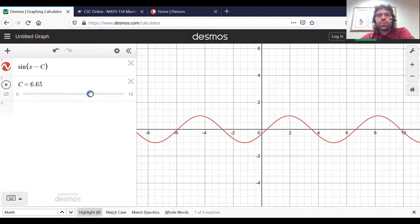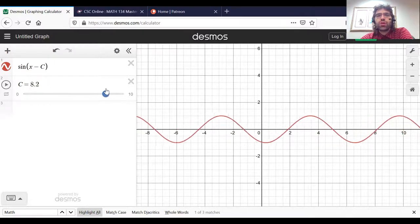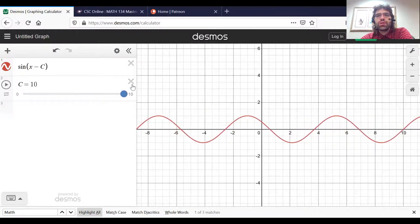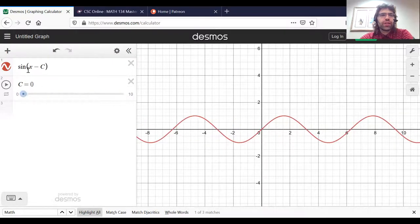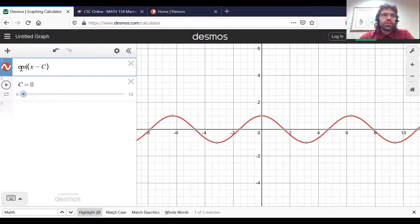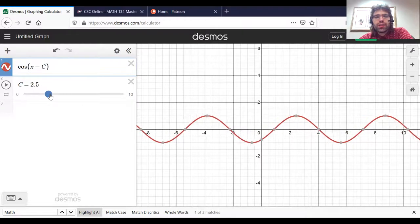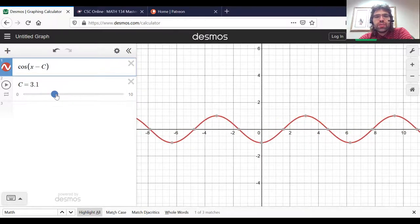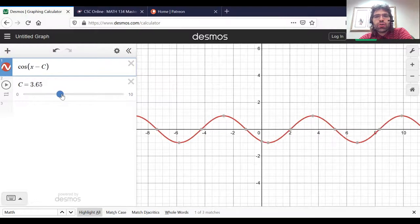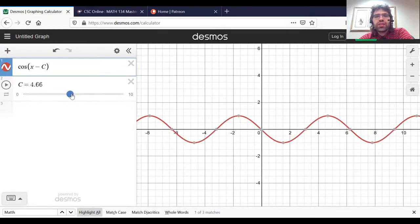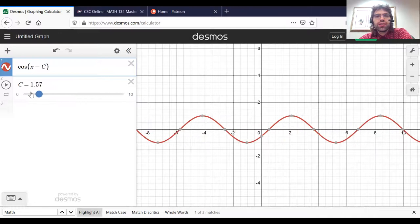but it's pushing it horizontally to the right. And if we replace that sine with a cosine, the same thing will happen. That c is taking the curve and pushing it c units to the right.